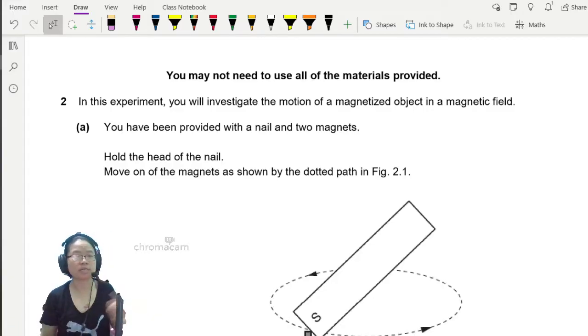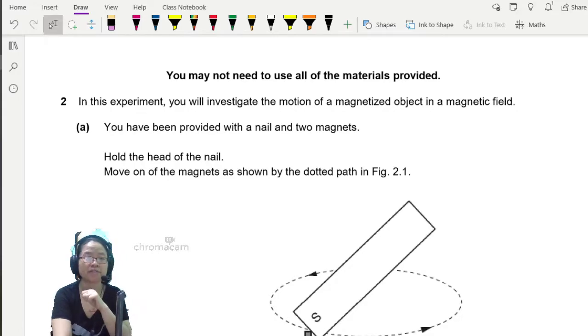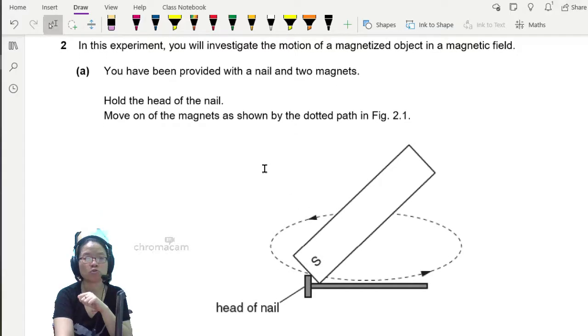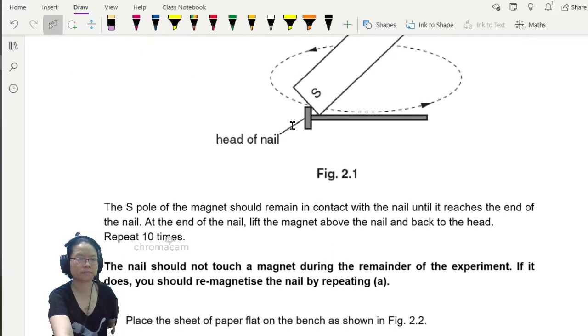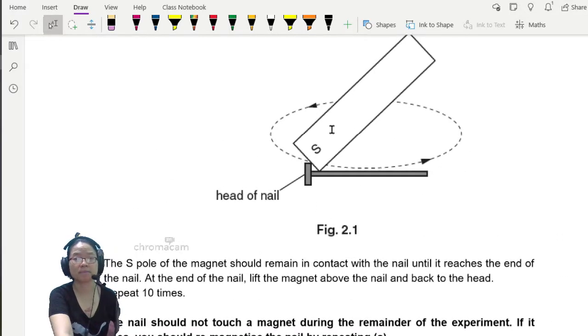The only part that I want to talk about is this part where you have nails and two magnets. And you are supposed to hold the head of the nail and move one of the magnets as shown in the dotted line part in figure 2.1. So this one you are trying to magnetize the nail. And the S-pole of the magnet should remain in contact with the nail until it reaches the end of the nail. At the end of the nail, lift the magnet above the nail and back to the head, repeat 10 times.